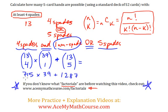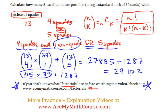Fantastic. So 715 times 39 is equal to 27,885 five-card hands with four spades and one non-spade. Plus 1,287 five-card hands with five spades. So let's add them up, and I get 29,172 five-card hands with at least four spades.